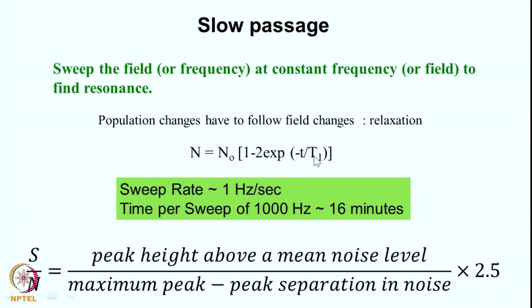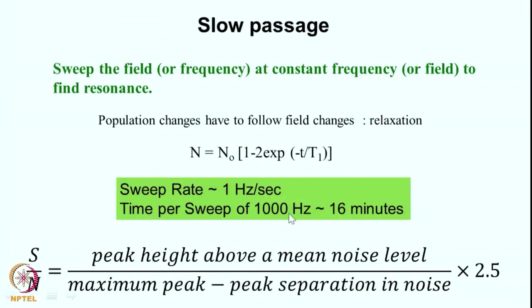Therefore if T1 is of the order of seconds, you cannot sweep the field too fast, otherwise you will not reach an equilibrium situation at every point you try to measure the resonance. So typically if I sweep the field at 1 Hz per second, for a spectrum width of 1000 Hz — which corresponds to 10 ppm on a 100 MHz spectrometer — this will take approximately 16 minutes for one sweep.